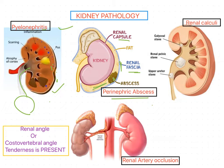In both pyelonephritis and perinephric abscess, the renal angle test is positive. In the case of renal calculi, also called nephrolithiasis, you can see stones formed inside the kidney. These are hard objects made from chemicals in the urine — usually calcium oxalate, uric acid, cysteine, phosphate, xanthine, etc.